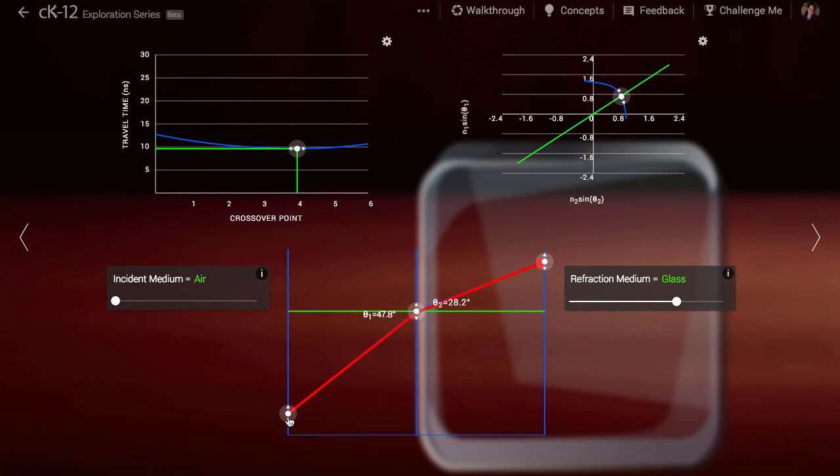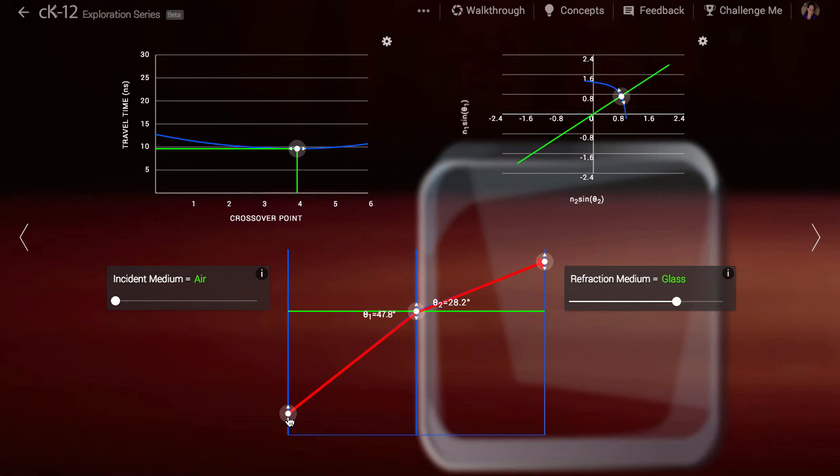The principle of least time is elegant, but to actually calculate the angle a light ray bends by, we need Snell's law. Snell's law and the principle of least time are equivalent to one another. Given one, you can work out the other. But Snell's law is more convenient for problem solving.